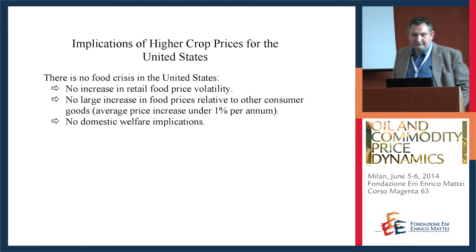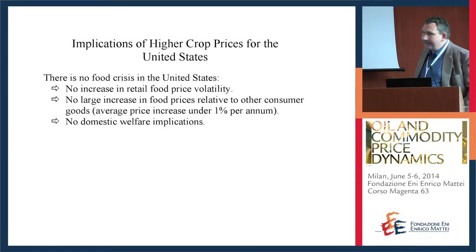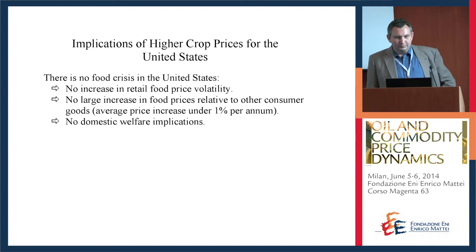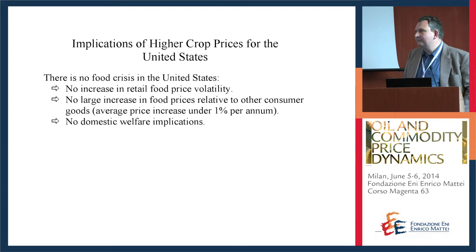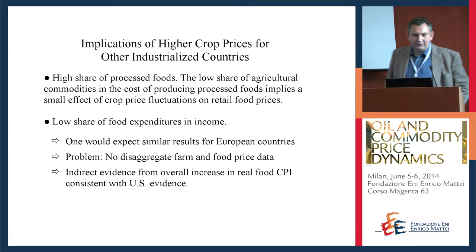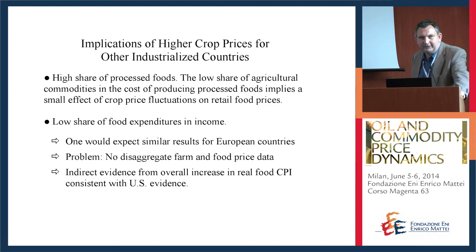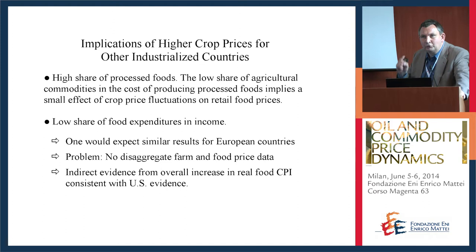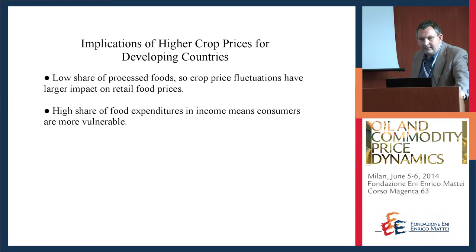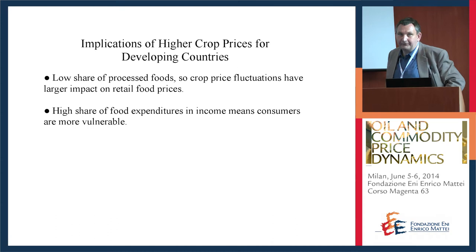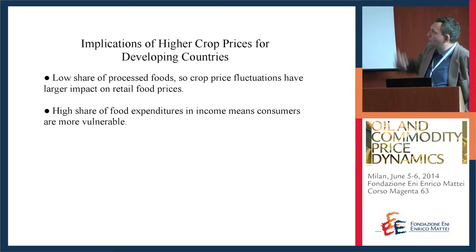Taking this back to implications for poor people in the United States: there is no food crisis. There is no increase in food price volatility, and there is no increase in food prices beyond about 1% per year — which is not very high. For industrialized economies outside the US, the story must be similar ex-ante, since they also eat processed food and don't spend a large fraction of income on food — indeed, retail food price growth rates are very low in all those countries. The situation changes in developing economies, where people eat less processed food and are much closer to the raw agricultural market, and where poor people spend a much larger fraction of their income on food.